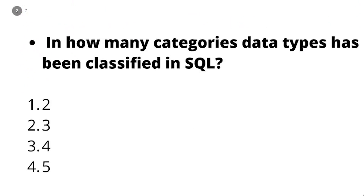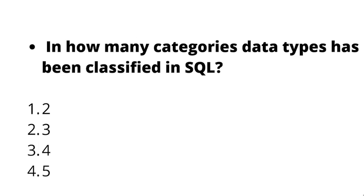As always, let's go solve a small quiz question. The question is: in how many categories have data types been classified in SQL? The four options are two, three, four, or five. If you know the answer, you can put it down in the comment section, or you can watch the video — we're going to discuss the answer to this question at the end.